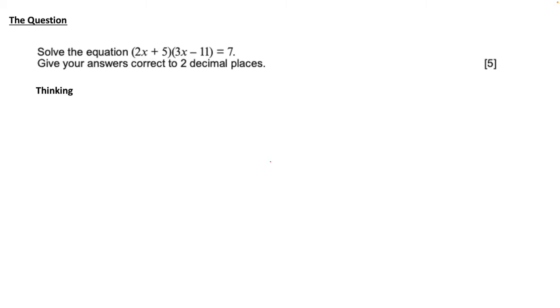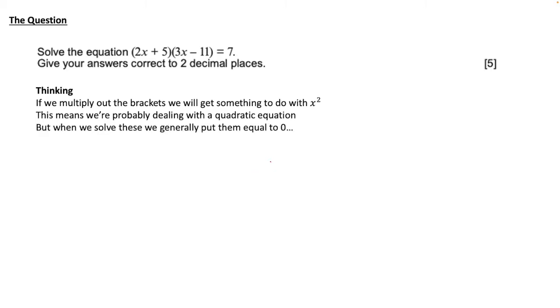So our thinking to start with is that if we multiply out the brackets we're going to get something to do with x squared. And this means we're probably dealing with the quadratic equation and when we solve these generally we put them equal to zero.